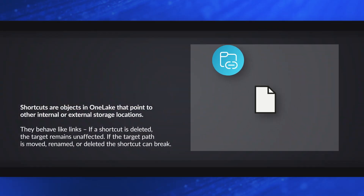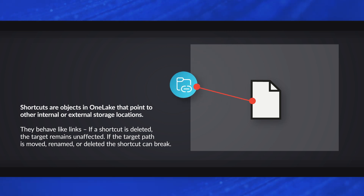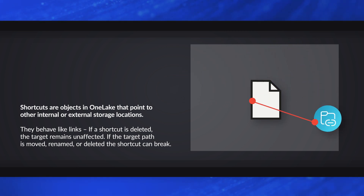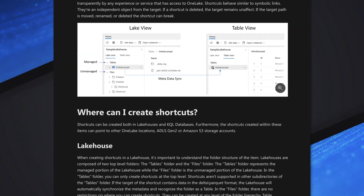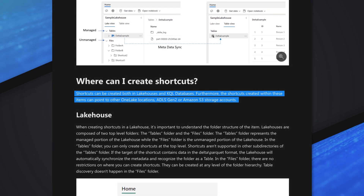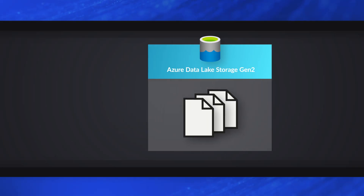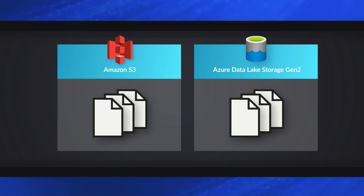Within Fabric, it's the same way — a shortcut is an object inside of OneLake within Microsoft Fabric that is just a reference to another location. This location can be something inside of OneLake or inside of Microsoft Fabric — it could be a lake house, a warehouse, or a KQL database, which covers the real-time analytics pieces. We can also reference things outside of Microsoft Fabric, like an Azure Data Lake Storage account or an Amazon S3 bucket. You don't necessarily want to move or copy all that data — you want to leave the data where it is. That's where the shortcut comes into play.